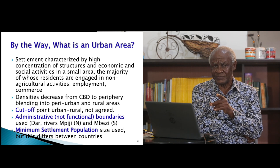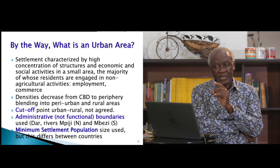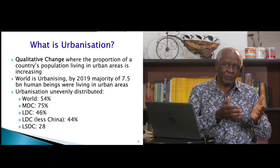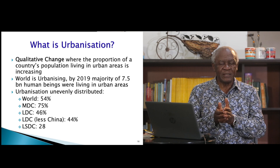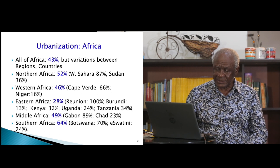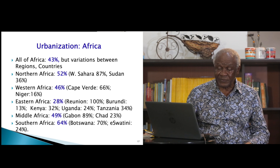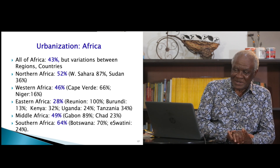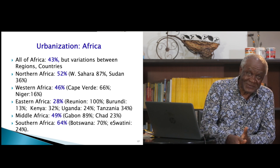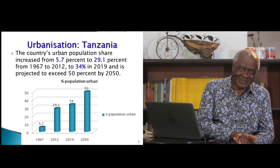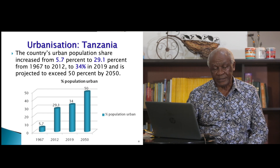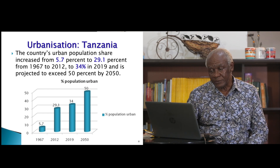Urbanization itself is differentiated from urban growth because urbanization is a qualitative change — more people in a country are living in urban areas. Africa in general is urbanizing. Tanzania is urbanizing: in 1967 only 5.7 percent of the population was living in urban areas, but today we are talking about 34 percent, and by 2050 we are thinking of 50 percent living in urban areas.